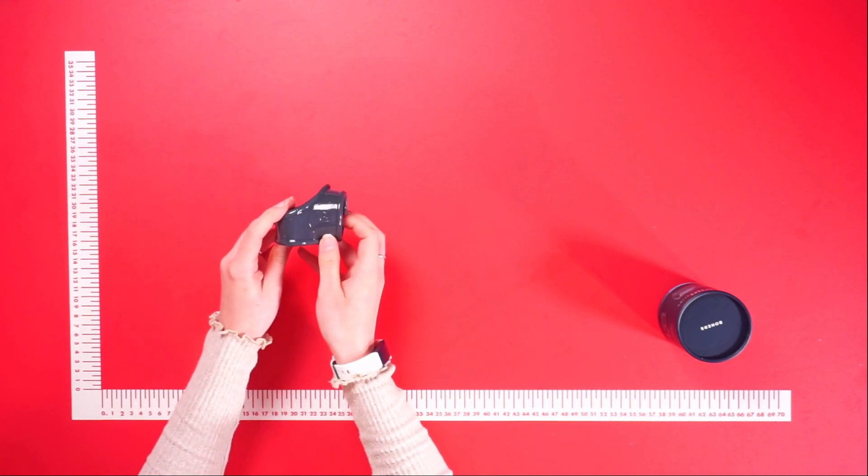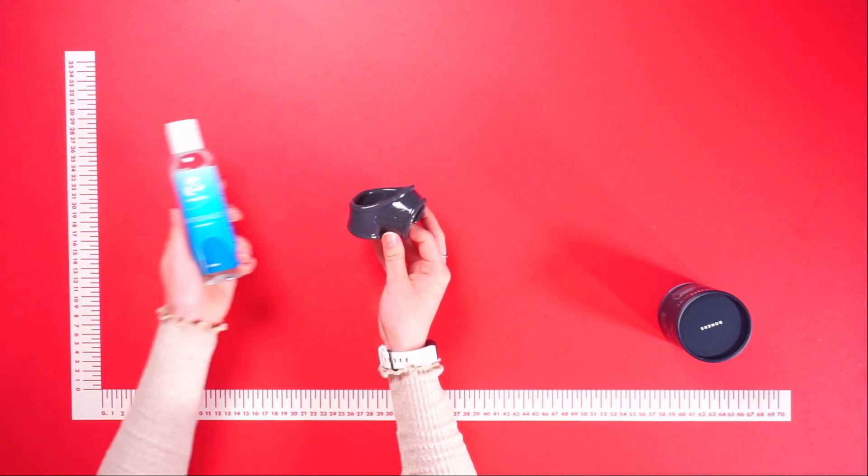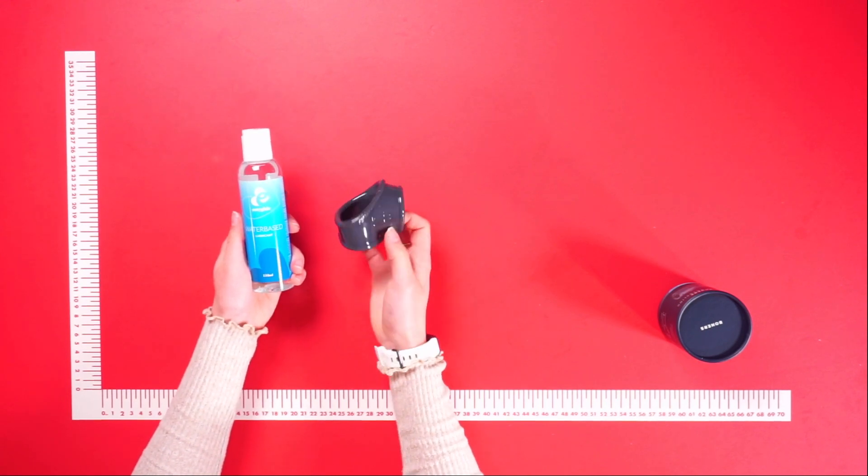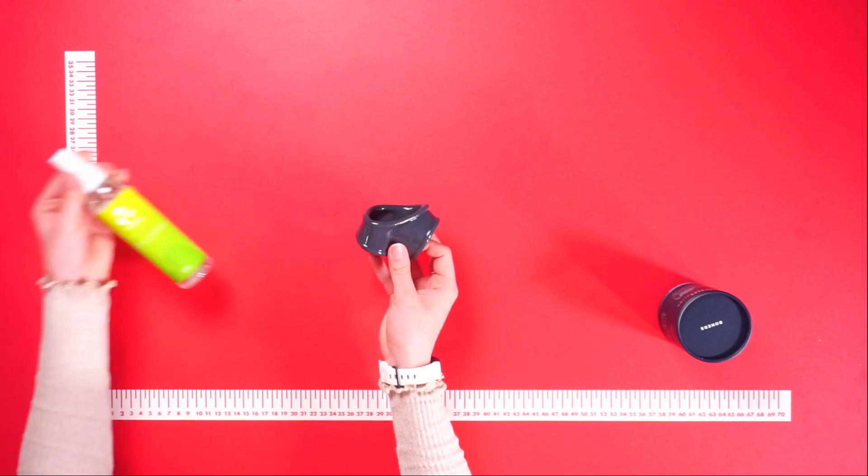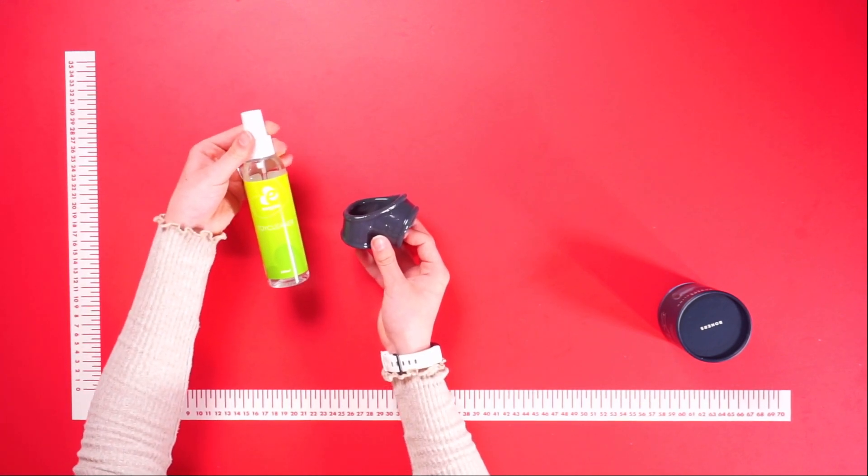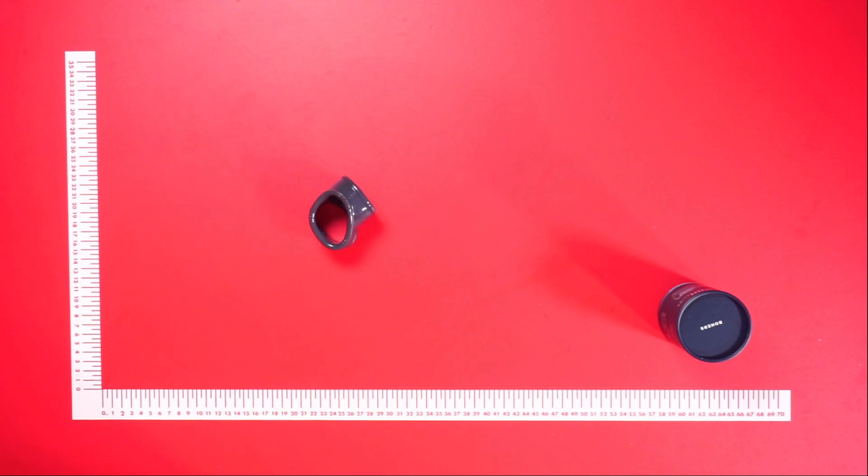When using the Coxling, we recommend to use a water-based lubricant for extra comfort during use. And after use, make sure you clean with a toy cleaner and dry with a dry cloth for good hygienic use.